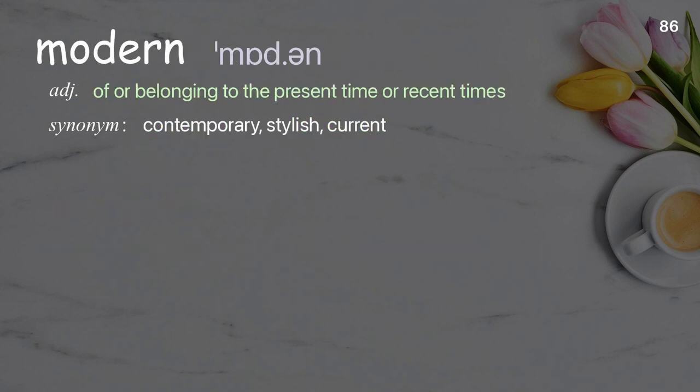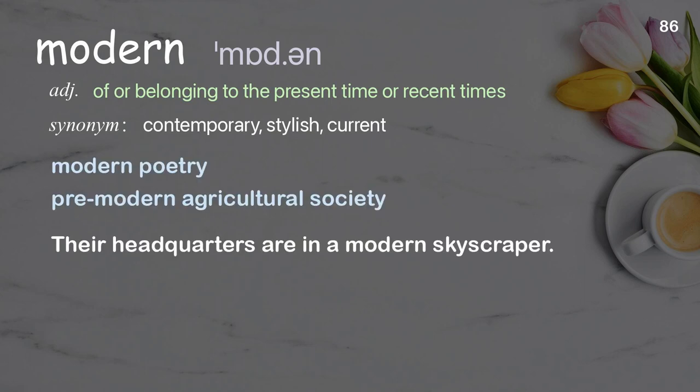Modern: of or belonging to the present time or recent times. Examples: modern poetry, premodern agricultural society. Their headquarters are in a modern skyscraper.